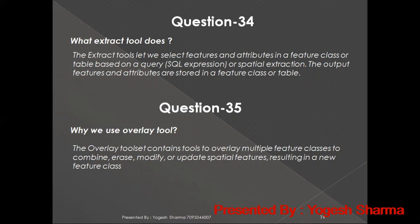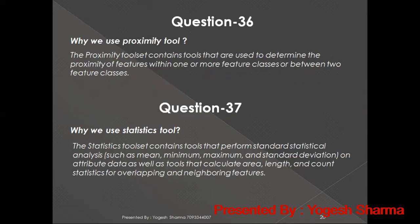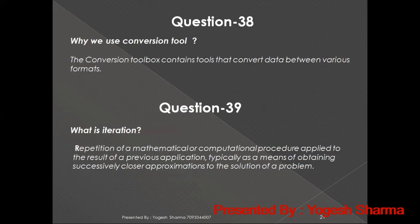What does the extract tool do? The extract tools let you select features and attributes in a feature class or table based on queries. Why do we use the overlay tool? The overlay tool combines multiple feature classes to combine, erase, modify, or update spatial features resulting in a new feature class. Why do we use the proximity tool? The proximity tool set contains tools to determine the proximity of features within or between feature classes — whenever something is related to distance, it is an example of proximity analysis. The statistics tool set performs standard statistical analysis such as finding mean, median, minimum, and maximum values. The conversion tool is used to convert data from one format to another.